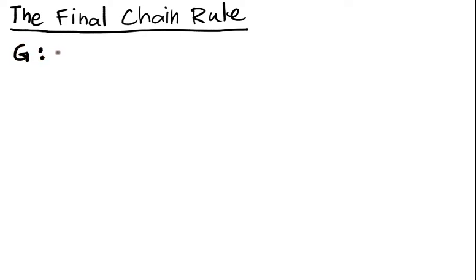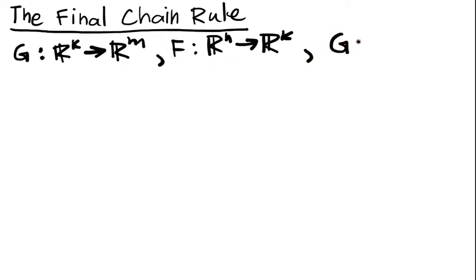In general, we're going to have g from R^k into R^m, and we'll have some function f from R^n into R^k, and both of these are differentiable. And we have that g composed with f is a function from R^n into R^m.